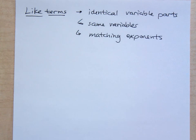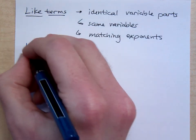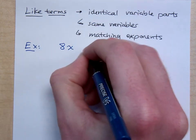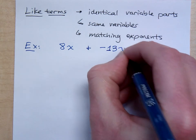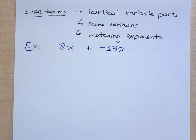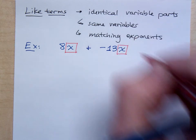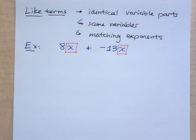And what we mean by that is that they have the same variables and they also have matching exponents. We want to talk about like terms so we know what are the things that we can combine.